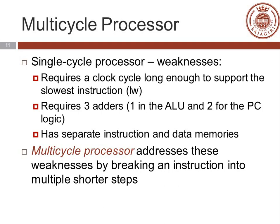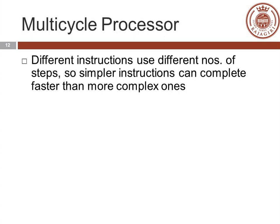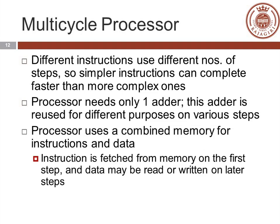The multi-cycle processor addresses these weaknesses by breaking an instruction into multiple shorter steps. Different instructions use different numbers of steps, so simpler instructions can complete faster than more complex ones. The processor uses only one adder, reused for different purposes at various steps. The processor also uses a combined memory for both instruction and data — the instruction is fetched from memory on the first step and data may be read or written on later steps.